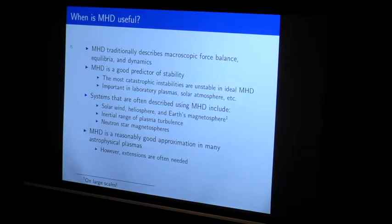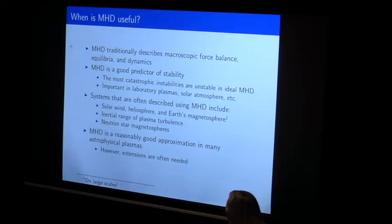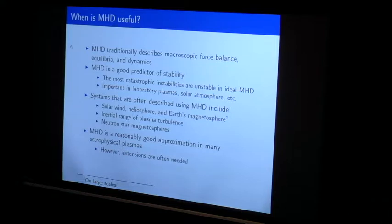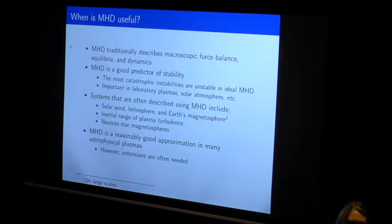Systems where you can often reasonably use MHD include the solar wind, heliosphere, and magnetosphere — these are great places because not only can we study them numerically and theoretically, but we can also take in-situ measurements with spacecraft making direct measurements of the magnetic field, electric field, velocity, and density, and then compare with how our equations and codes hold up under these approximations.